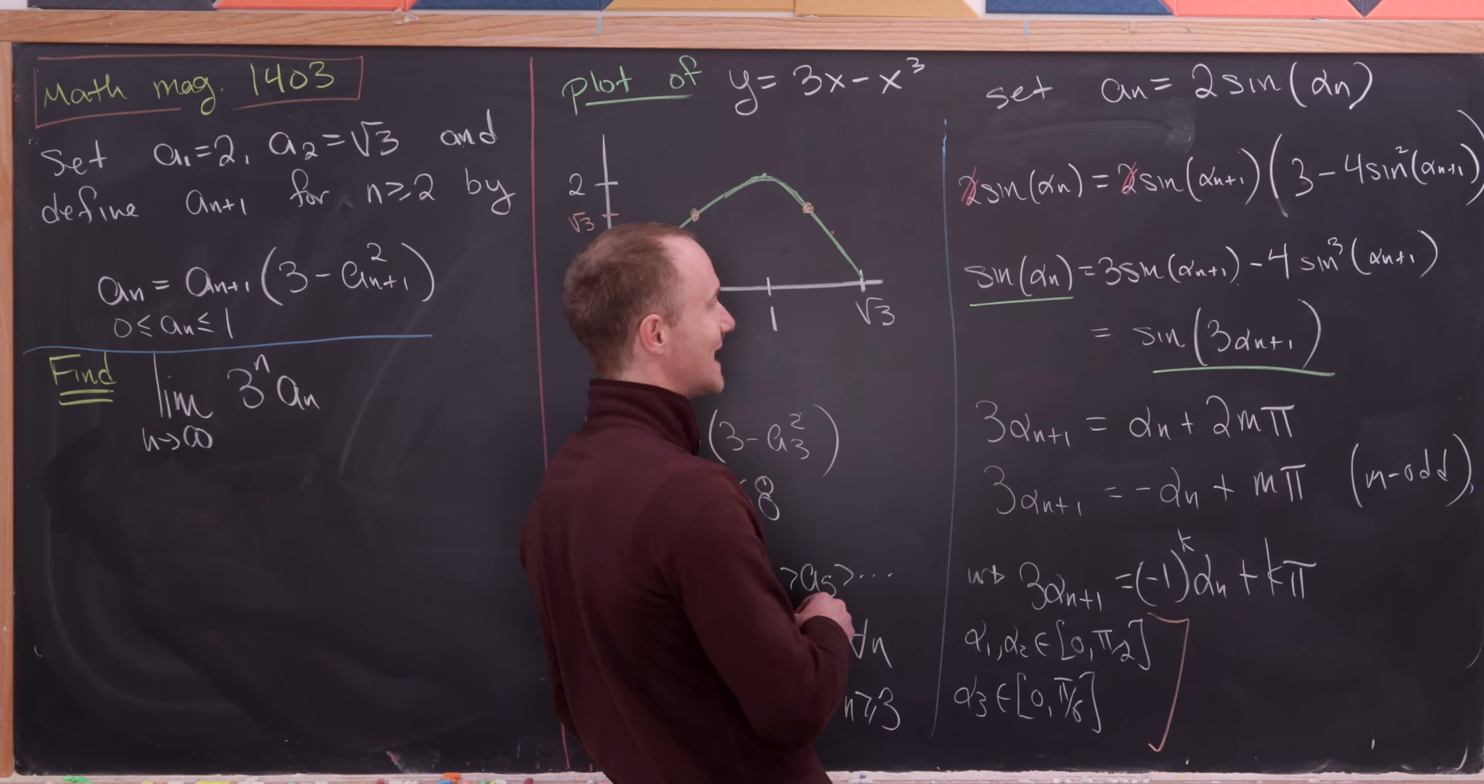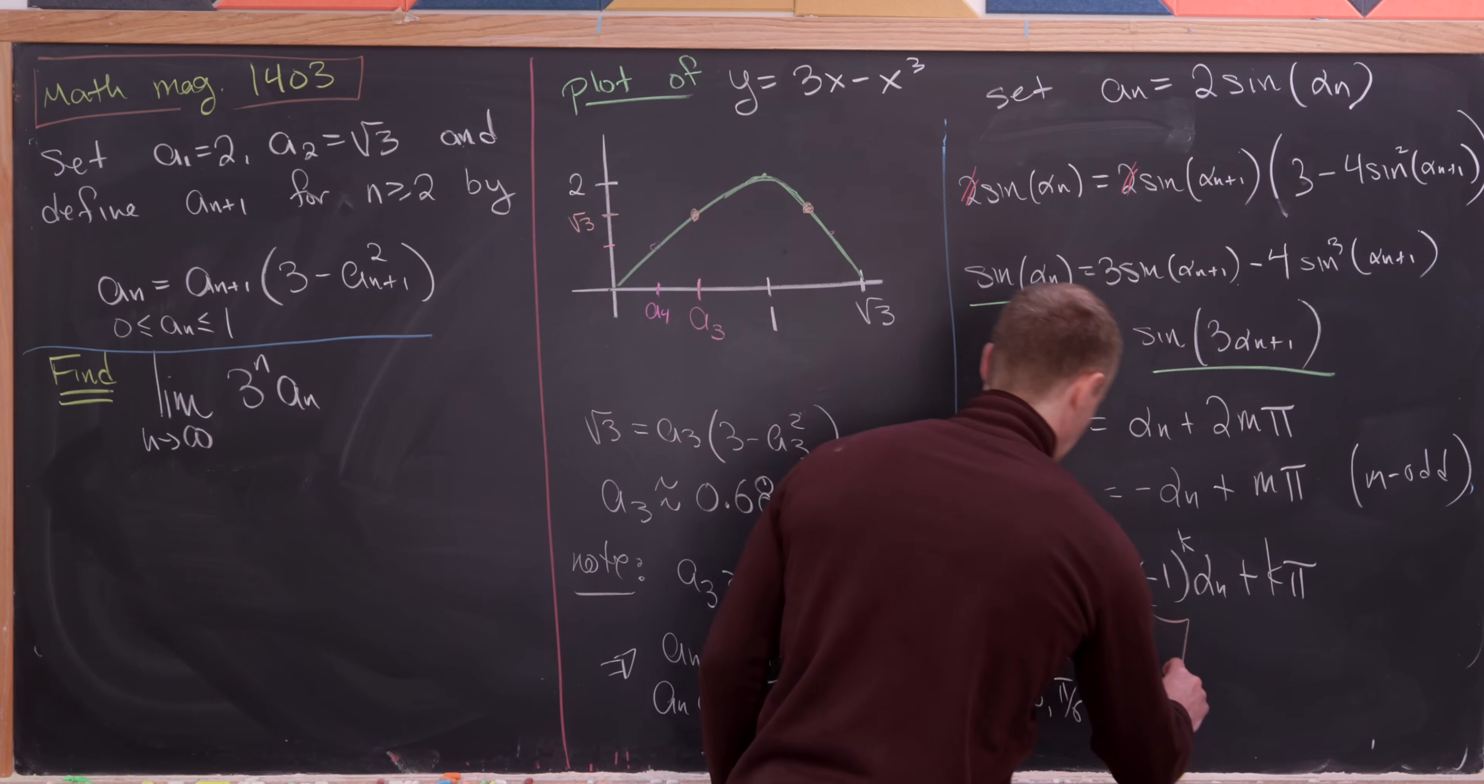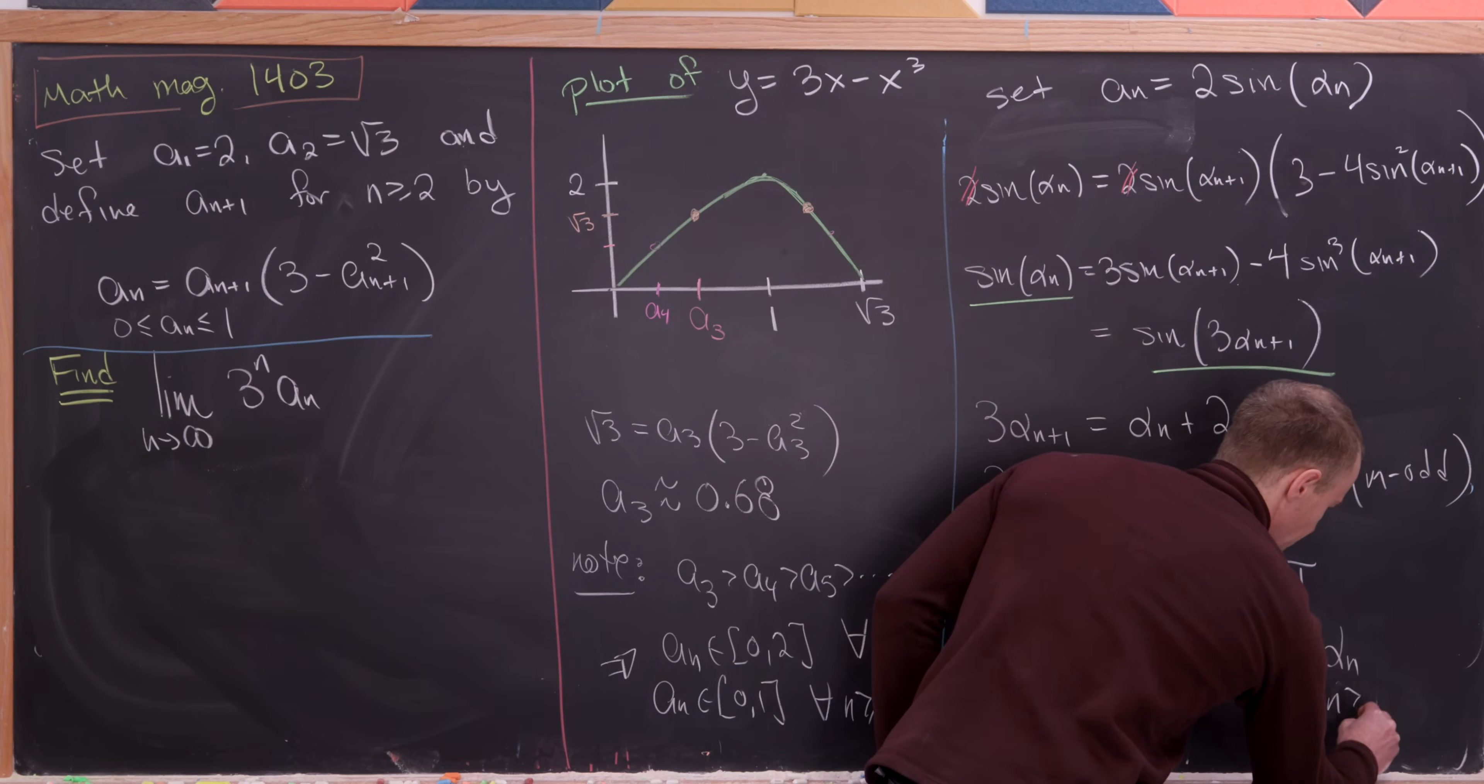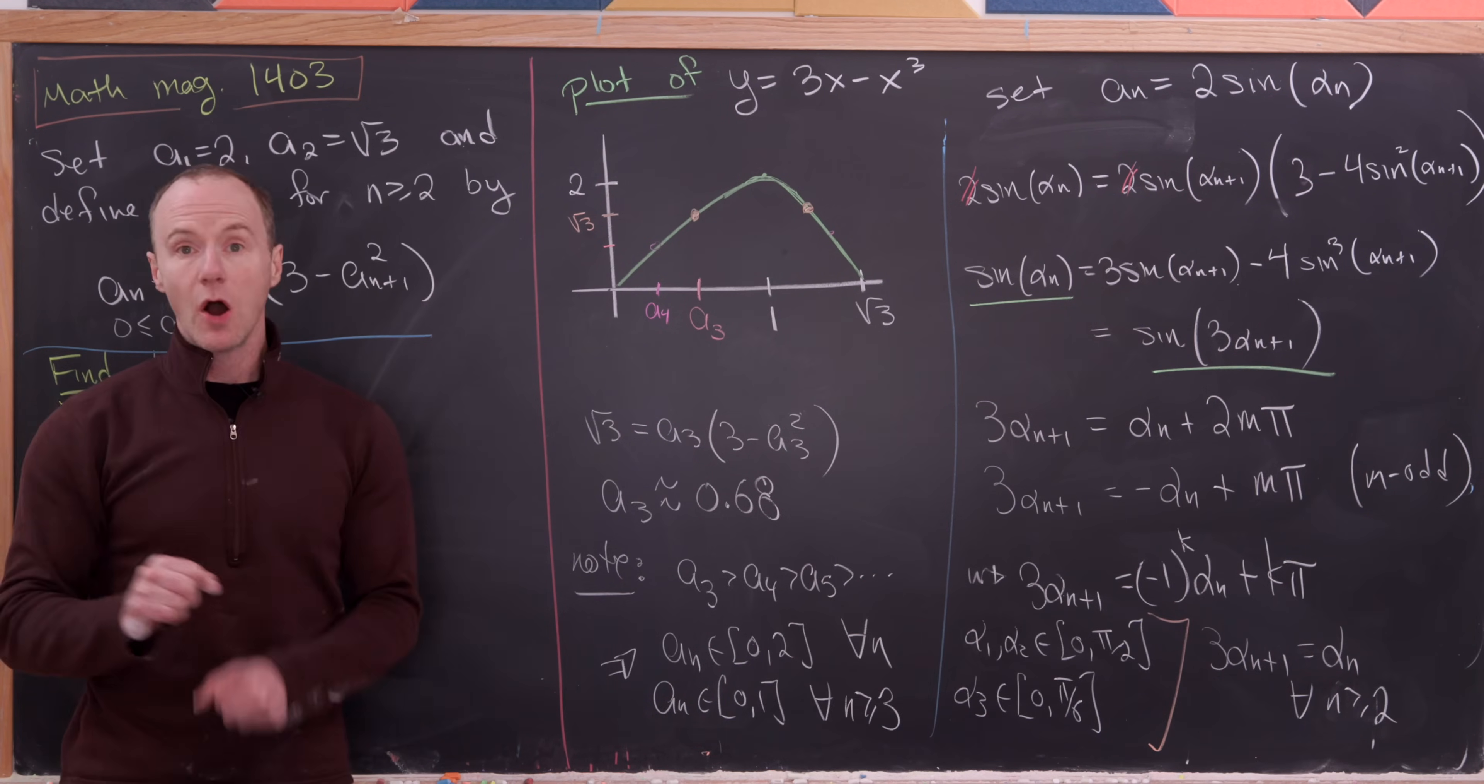Okay, so well what that tells us is that in fact we have 3 alpha n plus 1 equal to alpha n for all n bigger than or equal to 2.